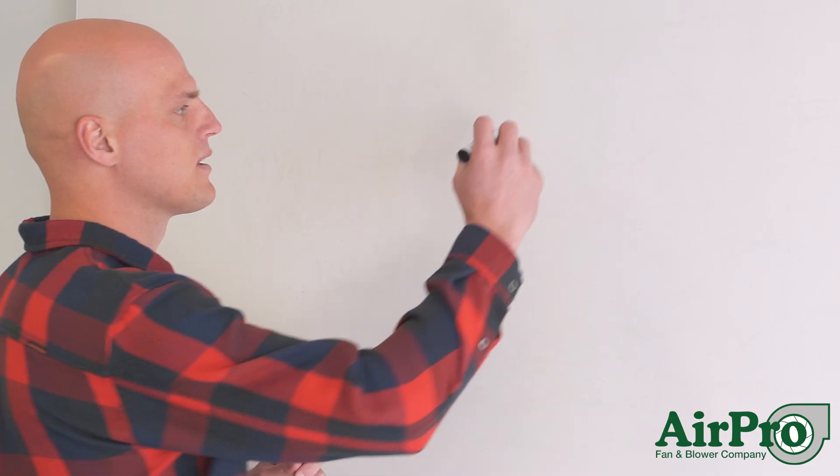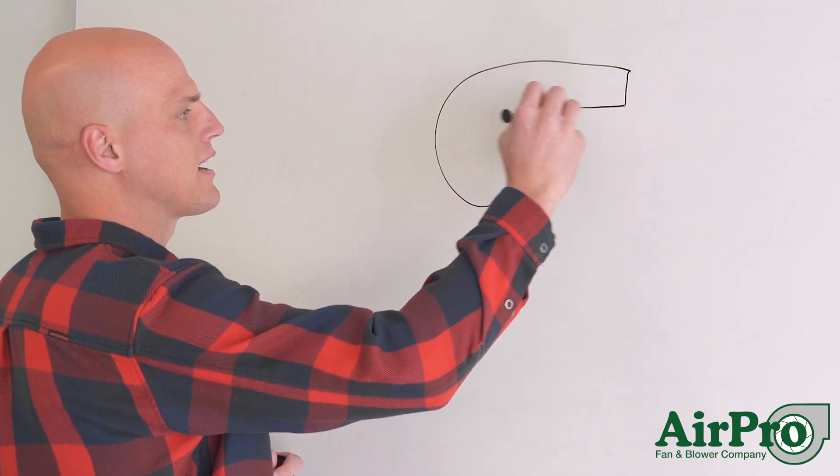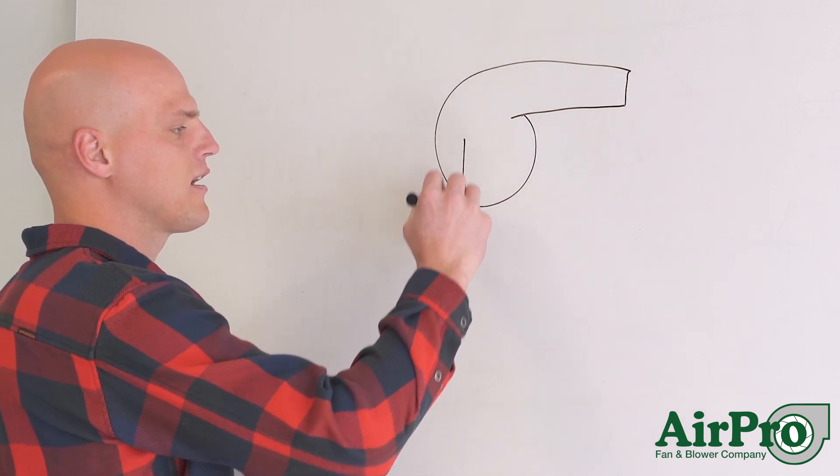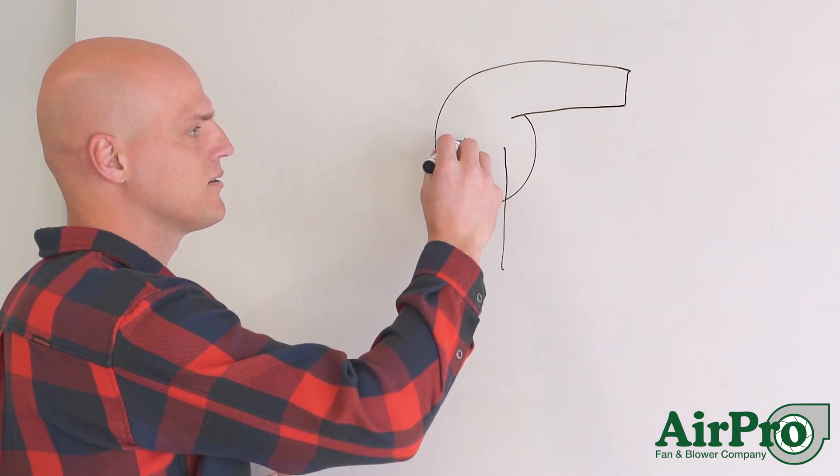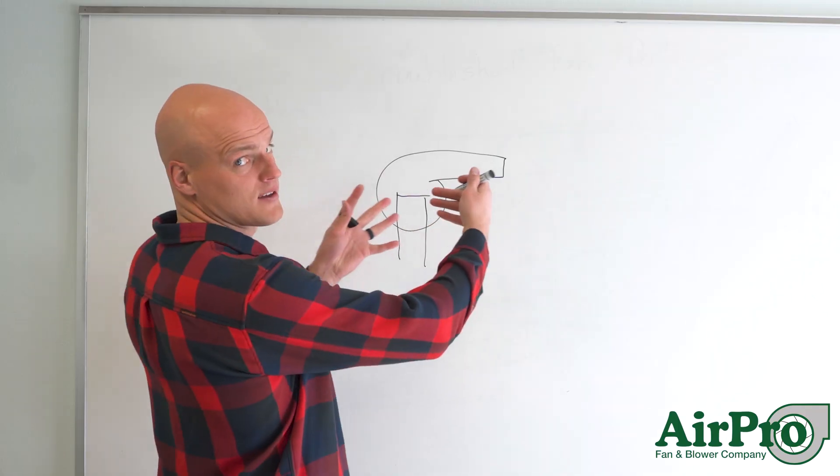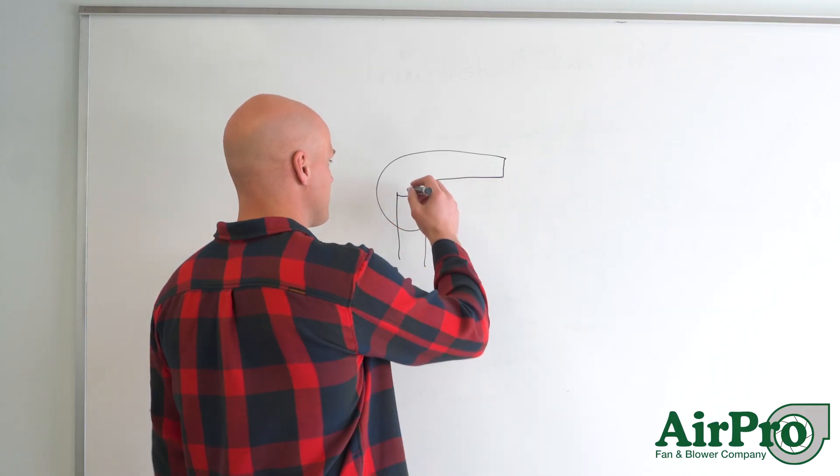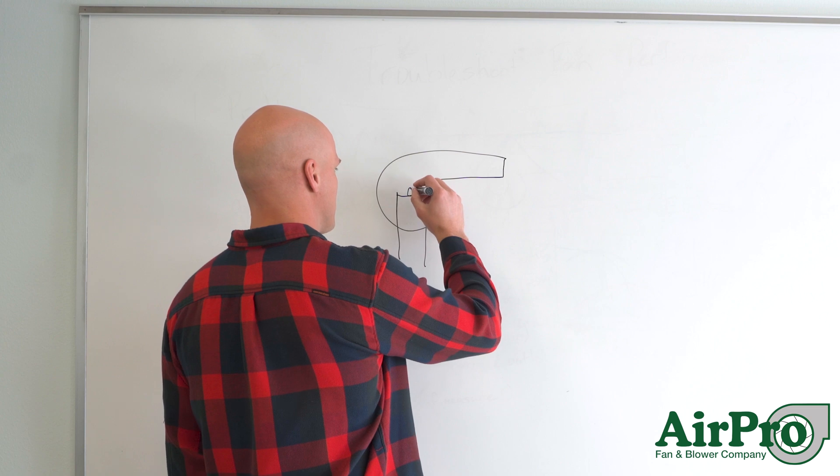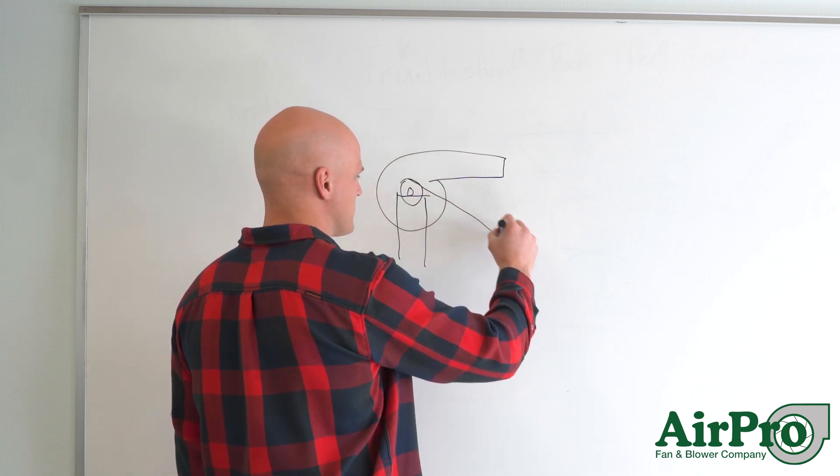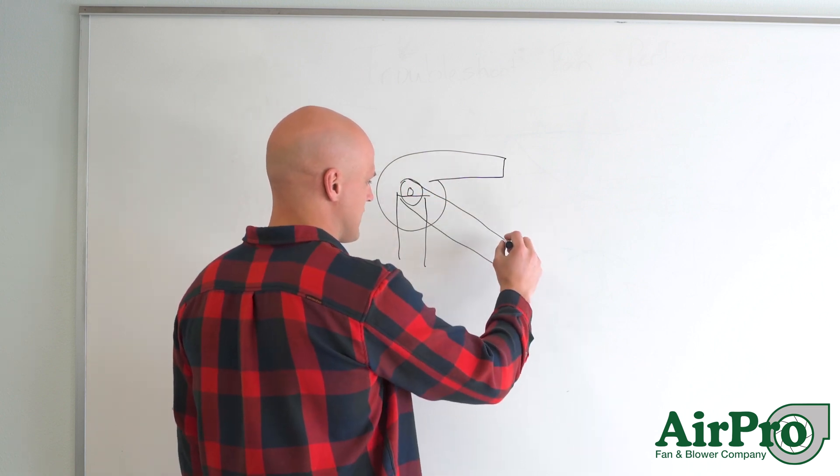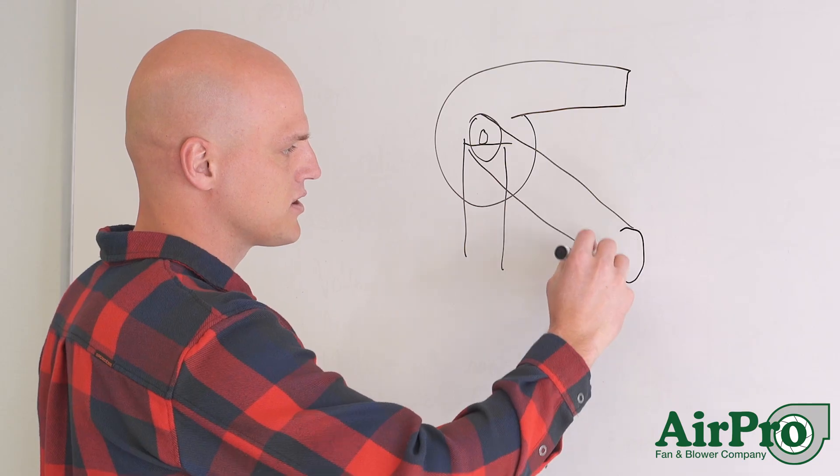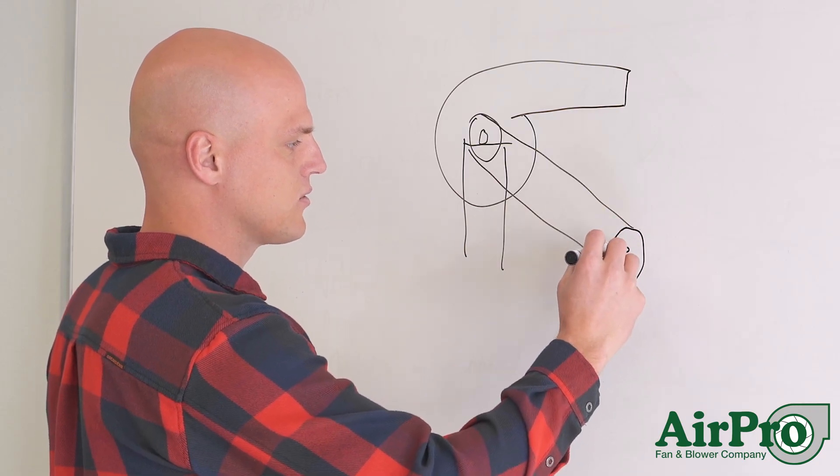So if we look at them real quick, the V-belt fan looks like this. You've got your fan there, you've got your pedestal. This is all coming back towards us right now. And then off the shaft of the fan here, we have a sheave that runs belts down to another sheave that is connected to your motor.